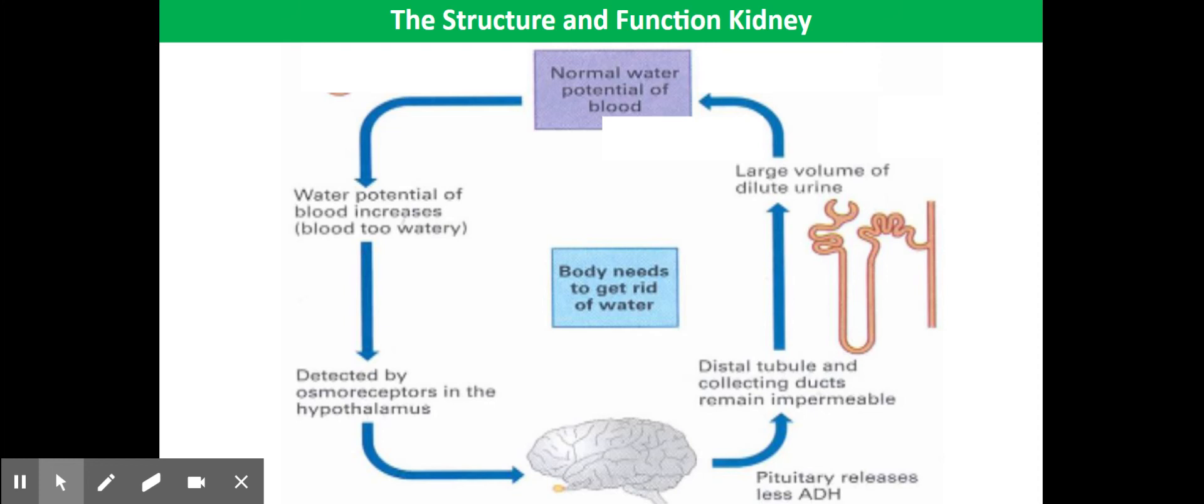What this means is less water will be reabsorbed into the blood from the nephron, which means more water is going to be lost from the body. You're going to have a larger volume of dilute urine produced. So the overarching picture here is if you have too much water in the blood, you're going to end up needing to go to the toilet and do a massive wee, and that wee is going to be really dilute.